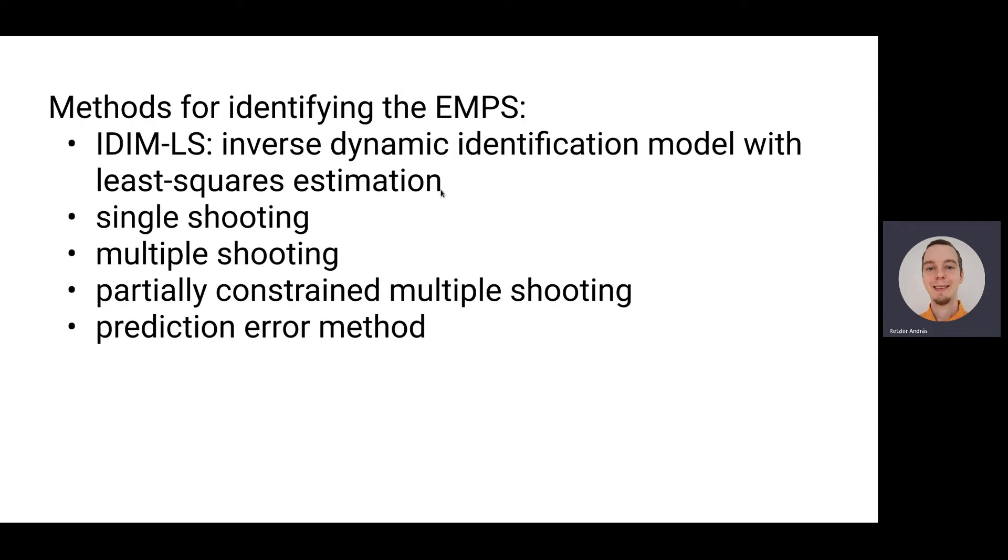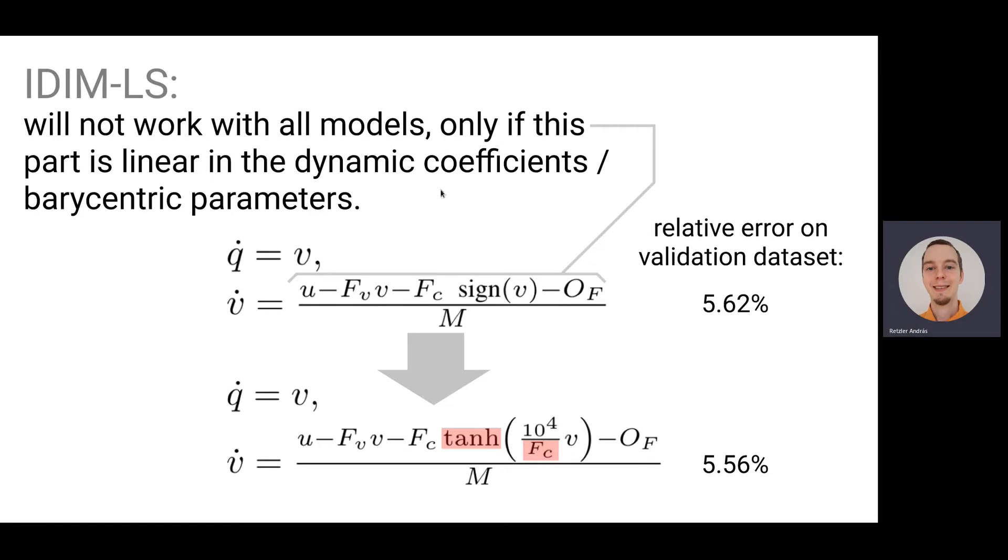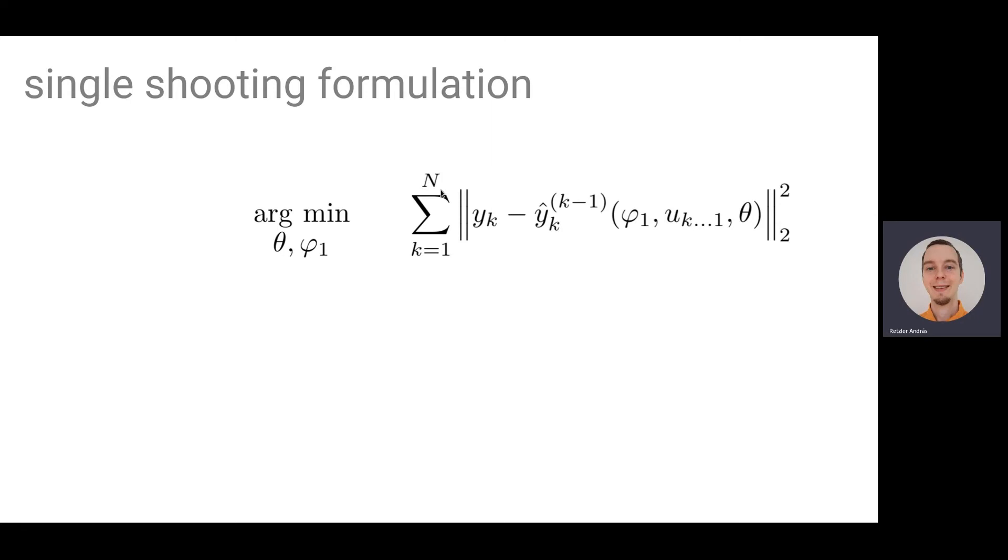So basically, this one in the original paper, there was this the iterative LS method. I will not go into that in detail now, but it only works if that part of the equation is linear in the dynamic coefficients. We changed the equations, we used a little bit different model for the friction, where you have a parameter inside the non-linearity, then you cannot use this model anymore. But you can still use the, you can still use like our toolbox and the single shooting formulation. So this is also the formulation that the MATLAB toolbox can do. It cannot do the other ones, like the multiple shooting and so, as far as I understand.